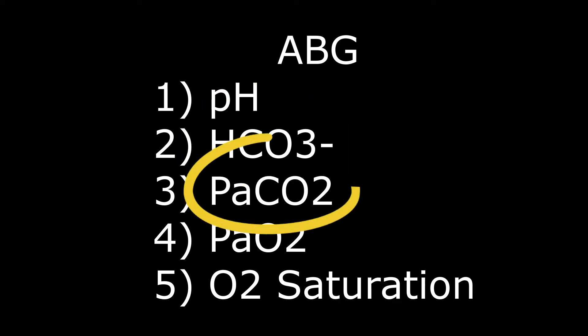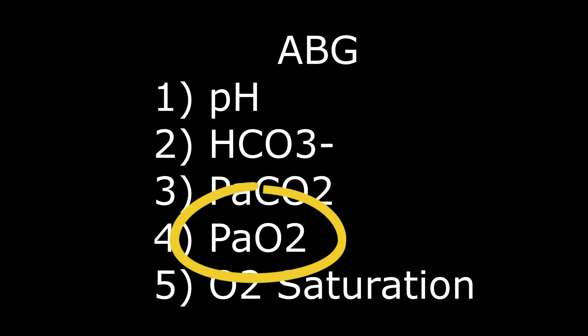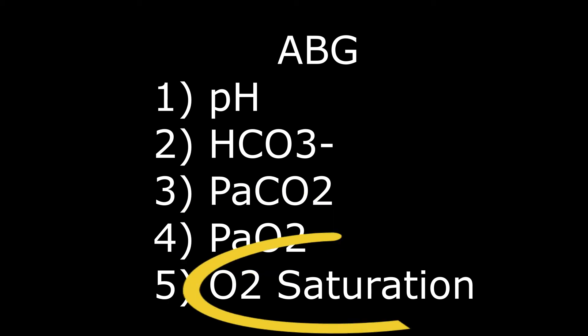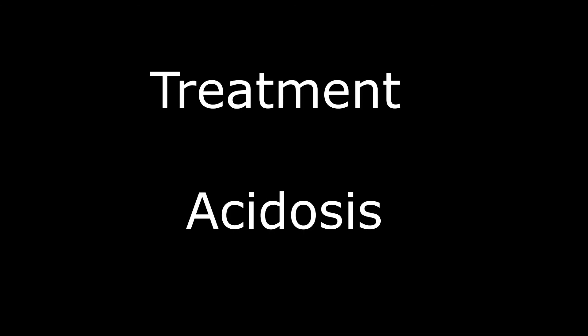Normal ABG values: bicarbonate levels 22 to 26, partial pressure of carbon dioxide 35 to 45, and partial pressure of oxygen 80 to 100. You can also check oxygen saturation, which should be 95 to 100%. For acidosis, you usually administer either bicarbonate supplements or sodium citrate, and you must try to treat the cause. You can also give oxygen or IV fluids.